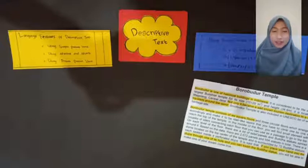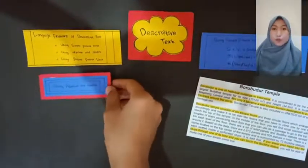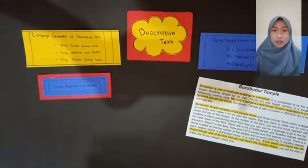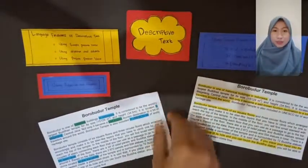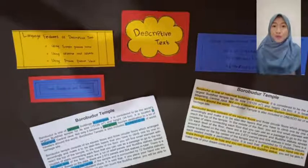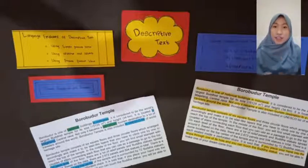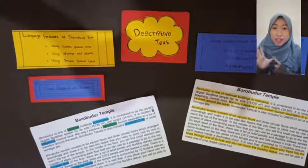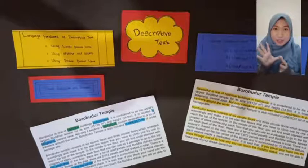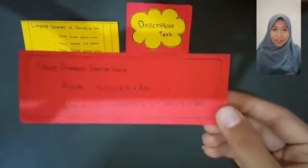The second language feature is using adjectives and verbs. For example, using adjectives: 'historical' and 'well-known.' Using adverbs of place, for example: in Indonesia, in Magelang, in Yogyakarta, on its level, on the top center.